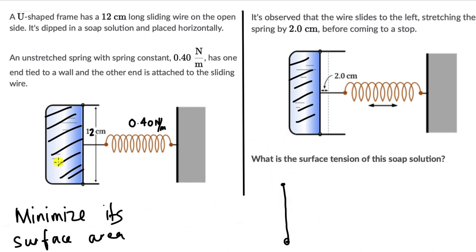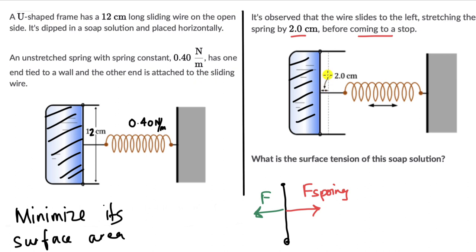Let's draw the free body diagram for the wire. There must be some force acting to the left, and we know there is a spring attached to the right, so there is also a force acting to the right due to the spring. The question says the wire moves 2 cm before coming to a stop. By Newton's second law, when it stops, the forces must be balanced: the force from the soap solution equals the force from the spring.